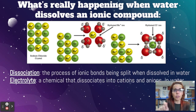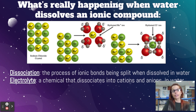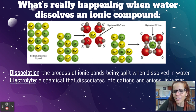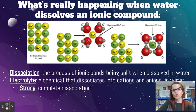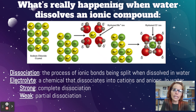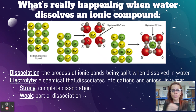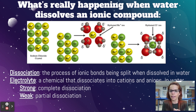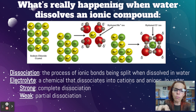Dissociation is the word that means the process of ionic bonds being split when dissolved in water. An electrolyte — which is what salt water is — is a chemical that dissociates into cations and anions. Remember, cations are positive and anions are negative. A strong electrolyte completely dissociates — salt water is a strong electrolyte. A weak electrolyte only partially dissociates, meaning some of them separate and some of them stay together. We're going to learn more about strong and weak electrolytes in an upcoming unit.